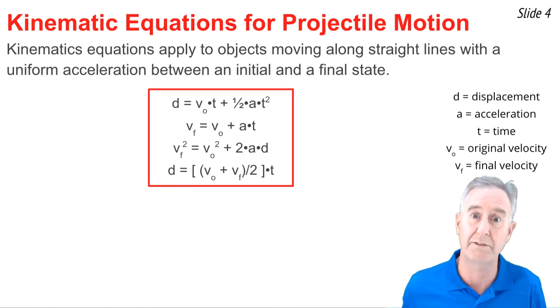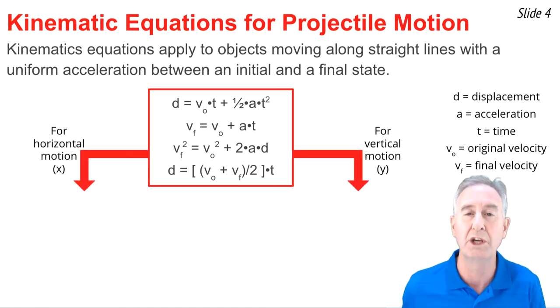There's two velocity values, V subscripted O for original velocity and V subscripted F for final velocity. Since these equations work for one-dimensional motion, we're going to need two sets of them, one for the x motion and one for the y motion.